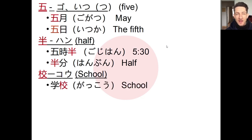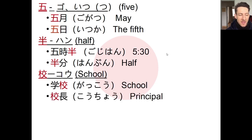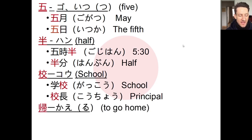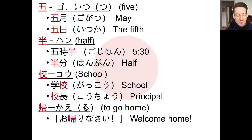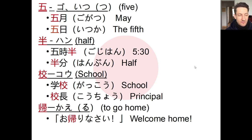The next character is 「校」, seen in gakkou — school. We have shougakkou for elementary school, chuugakkou for junior high, and koukou for high school. And if you have the leader of a school, the principal, that's the kouchou. Last, we have the character 「帰」, kaeru — to go home. It's the same character you'll hear in okaerinasai, which is what someone says when you come home and call out tadaima — welcome home.